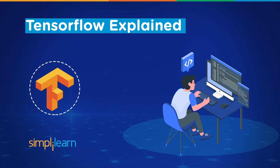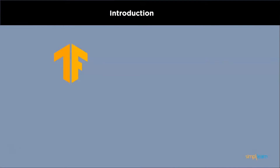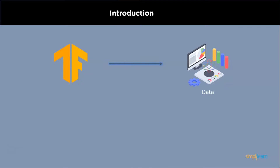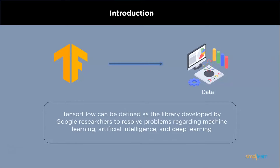The most useful machine learning library in the world is Google's TensorFlow. It is your best friend if you have lots and lots of data. If you have tried it once but got out with a bizarre experience saying TensorFlow is too complicated and academic, then please think again. It is not so complicated but normal. TensorFlow can be defined as the library developed by Google researchers to resolve problems regarding machine learning, artificial intelligence, and deep learning.